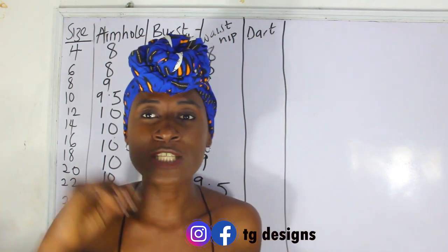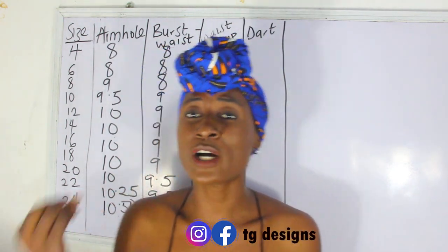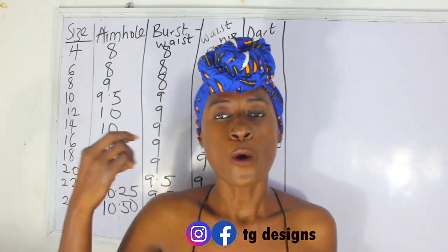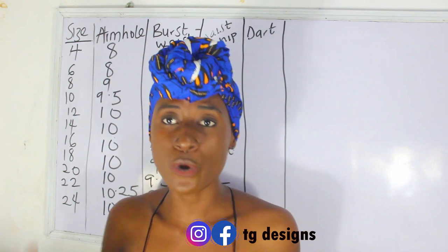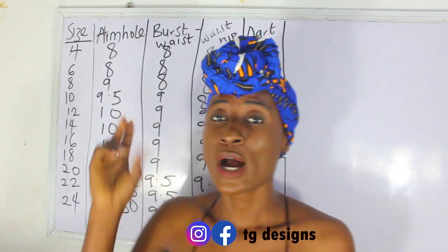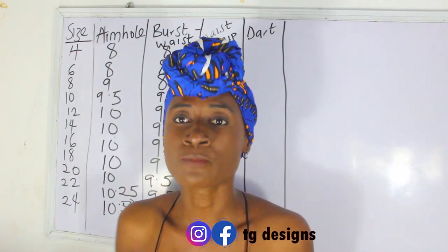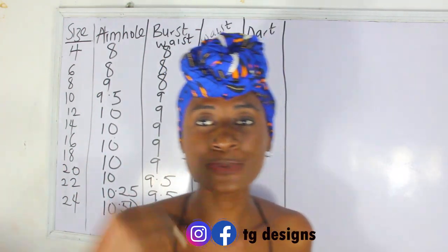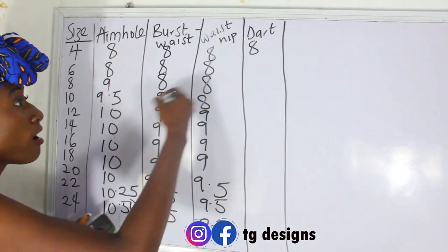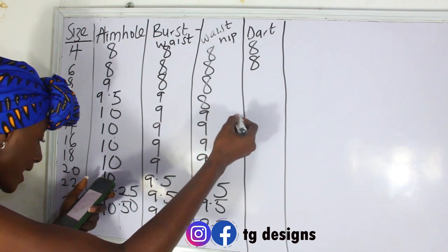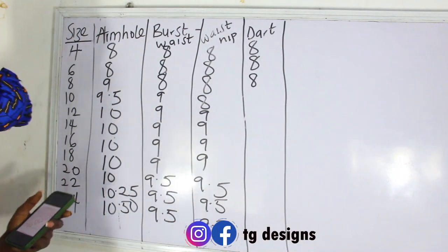Even in the waist-to-hip measurements you can see that the numbers are repeated across two or three sizes. The next measurement is the dart. Your dart measurement is determined by your bust measurement — your bust measurement enables you to know your dart measurement. As I explained in the first part of this series, the bust, waist, hip, and shoulder measurements are covered there, which is why that is part one. Now in part two we have armhole, bust to waist, waist to hip, and dart. Dart measurements: size 4 — 8 inches; size 6 — 8 inches; size 8 — 8 inches.